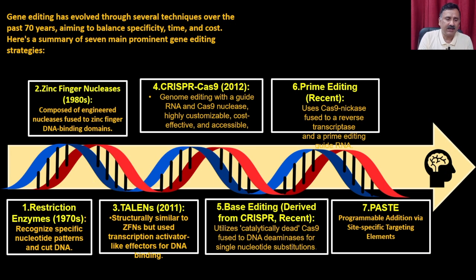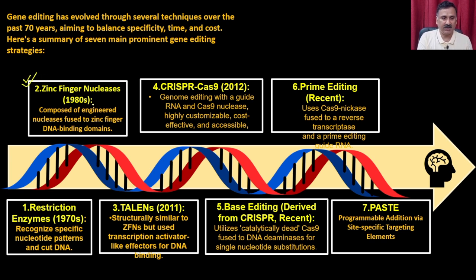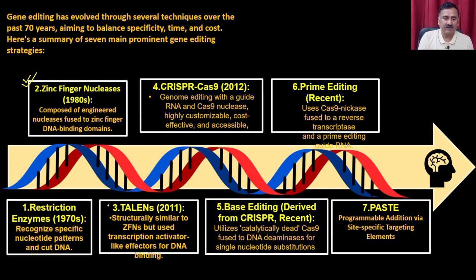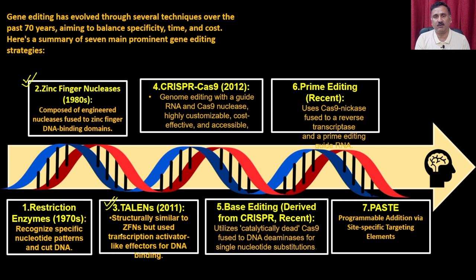We have a couple of modern approaches for genome editing. Looking at how genome editing evolved: initially people used restriction enzymes for cutting DNA. Then came zinc finger nucleases, discovered in the 1980s and engineered for genome editing. Then TALENs, similar to zinc finger nucleases but using transcription activator-like effectors for DNA binding. The latest approach is CRISPR-Cas, involving different types of proteins and other factors.